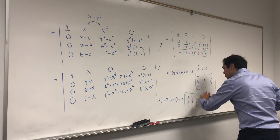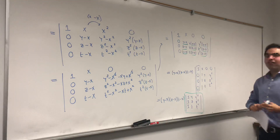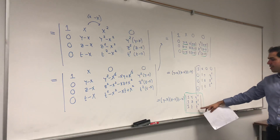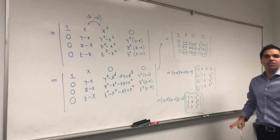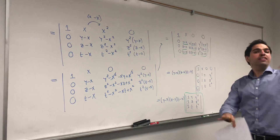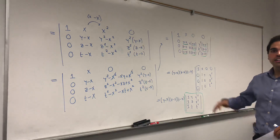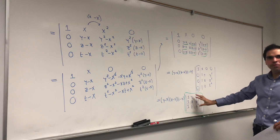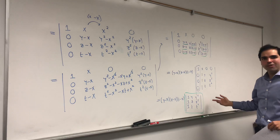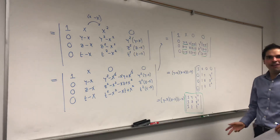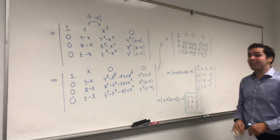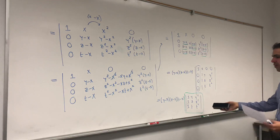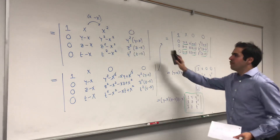So you took the 4×4 Vandermonde determinant and turned it into a 3×3 Vandermonde determinant. Now you can use induction: apply the same process to turn the 3×3 Vandermonde into a 2×2, then into a 1×1 Vandermonde, which is trivial. Then the question is: what is the general formula?